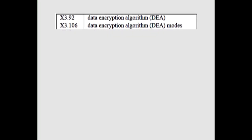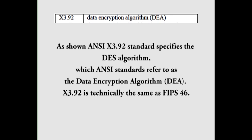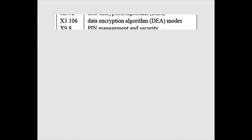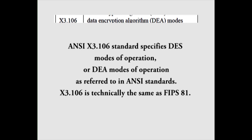ANSI X3.92 standard specifies the DES algorithm, which ANSI standards refer to as the DEA data encryption algorithm. ANSI X3.92 is technically the same as FIPS 46. ANSI X3.106 standard specifies DES modes of operation, or DEA modes of operation as referred to in ANSI standards. X3.106 is technically the same as FIPS 81.